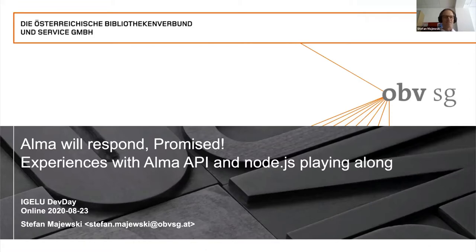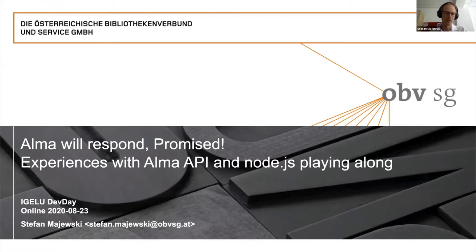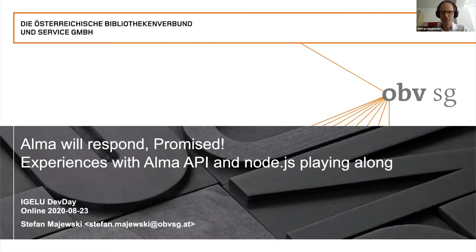Welcome to the presentation. It is mainly about our experiences with the ALMA API in the last couple of years, and the toolings we are currently building around the API and abstractions we are using. The pun is of course intended — 'promises' is our main concept in JavaScript for making asynchronous processing more easily readable and developable.